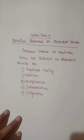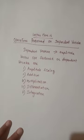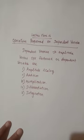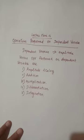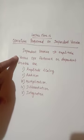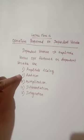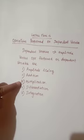In this video, we are going to discuss about operations performed on the dependent variable. In the last classes, we discussed about operations performed on the independent variable — time scaling, time shifting, and time reversal. Now, various operations performed on the dependent variable, or amplitude, are: amplitude scaling, addition of two signals, and multiplication of signals.